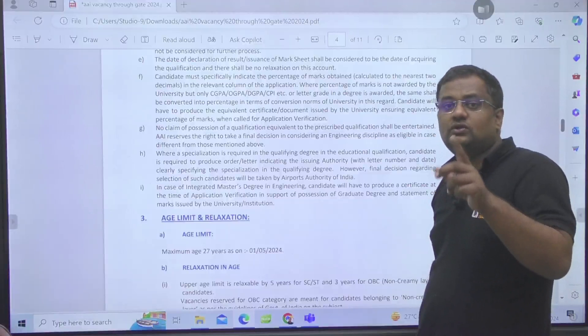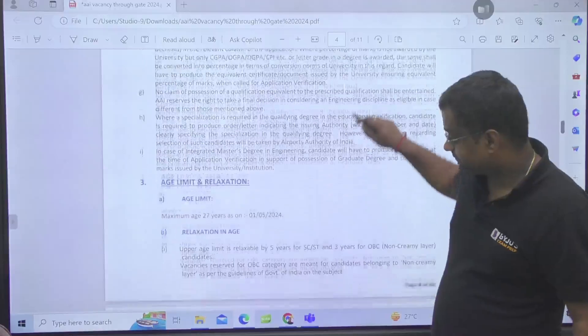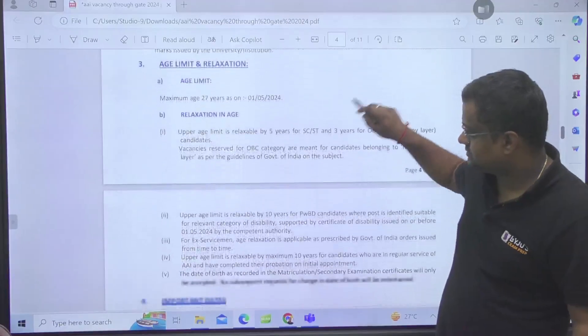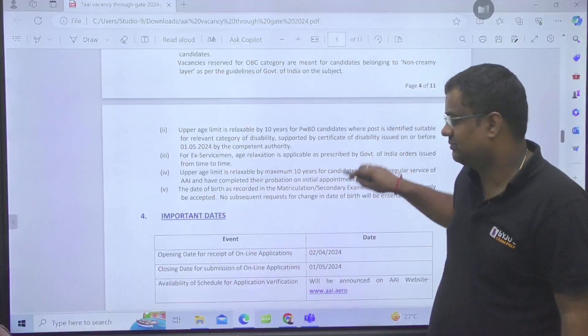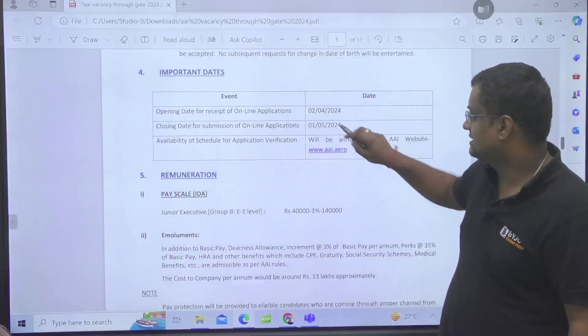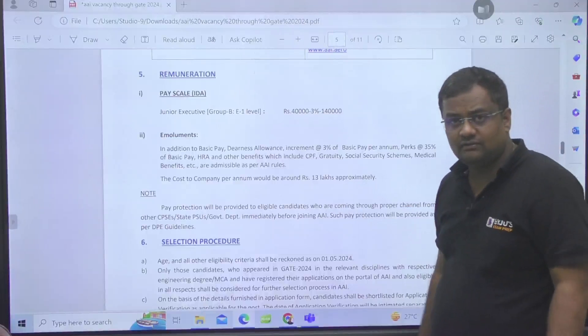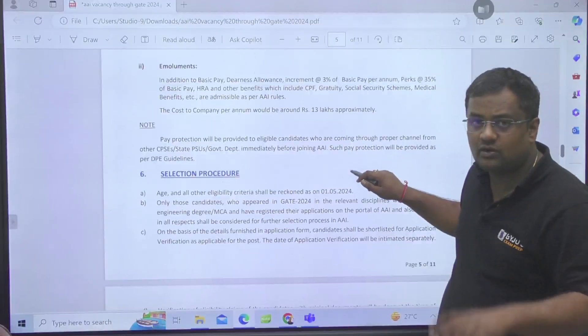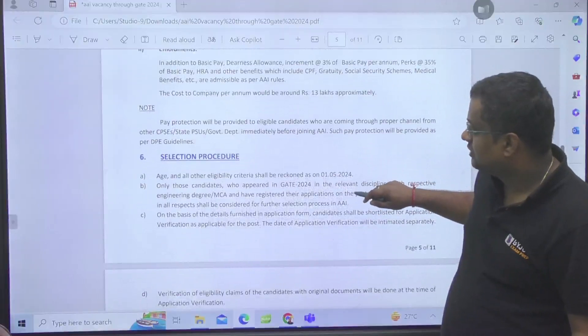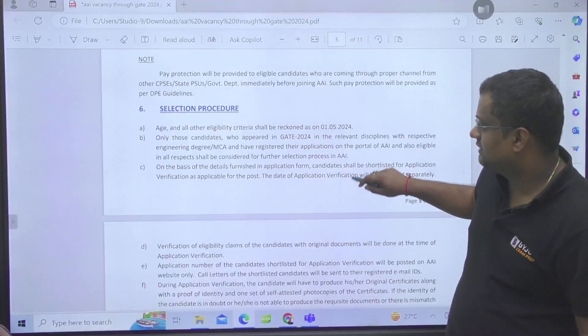Age limit is 27 years but there is relaxation of age for certain categories. This complete PDF I'll be sharing in my telegram group. Second April to first of May you can fill the form. The pay level is Group A, Level 10. Selection process is only on the basis of GATE 2024.